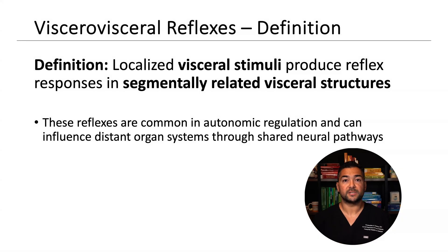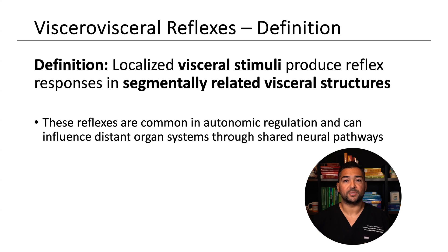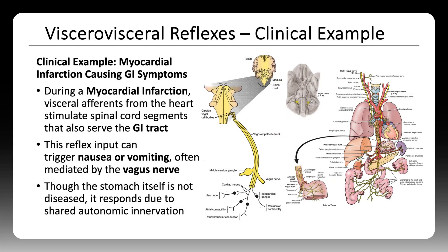Viscerovisceral reflexes occur between internal organs, mediated through shared neural pathways. These are common in autonomic regulation and explain crosstalk between systems. A myocardial infarction can activate visceral afference from the heart, which also projects to GI-related spinal segments. This can produce nausea or vomiting even though the stomach itself is unaffected — a classic viscerovisceral reflex.